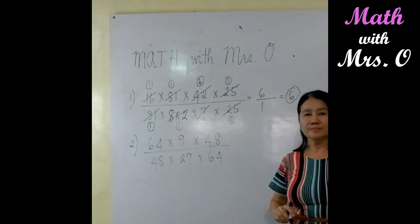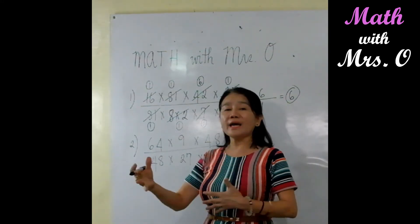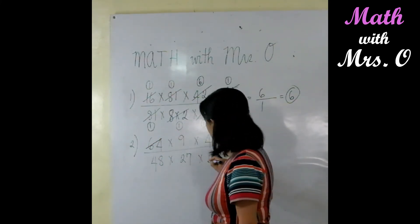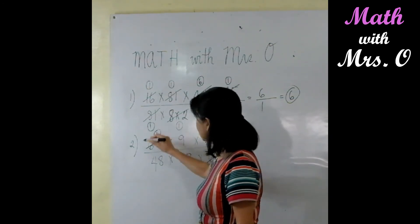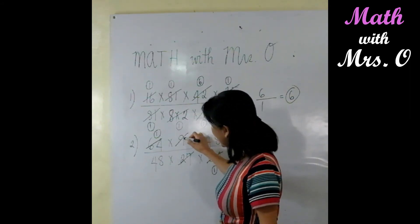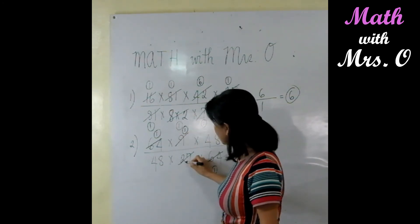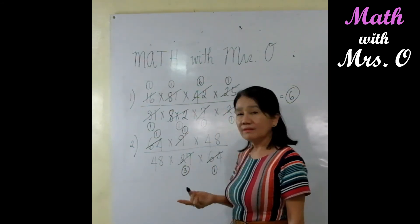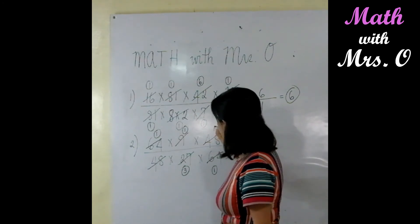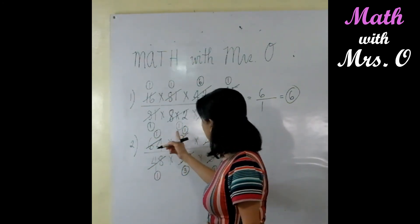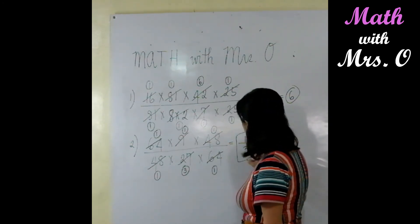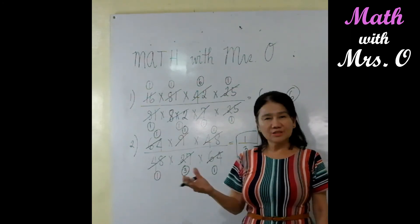Number 2. How do we do number 2? Find the numbers in the numerator and denominator that are cancelable. We can see that 64 over 64 is 1. What else? We see that 9 and 27 are both divisible by 9. So, 9 divided by 9 is 1, and 27 divided by 9 is 3. Then, 48 can be cancelled by 48, giving you 1 and 1. So, 1 times 1 times 1 is 1 over 1 times 3 times 1, which is 3. Your final answer is 1 over 3. Did you get it? Good.